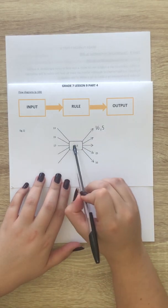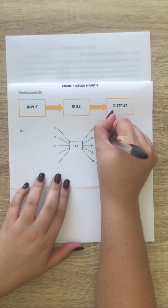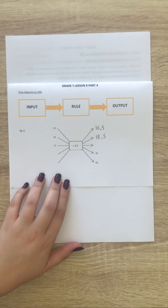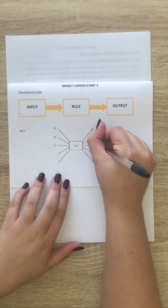Then 15 plus 3.5 is 18.5. Then 17 plus 3.5 is 20.5.